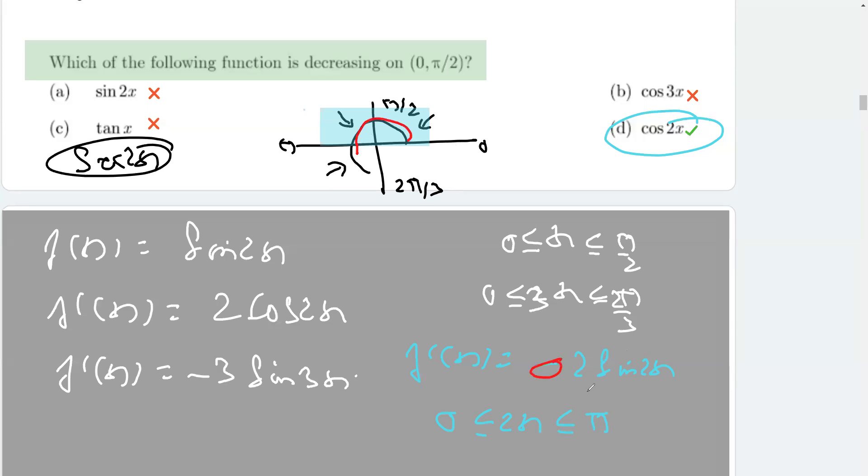But as you can see, there is a minus sign over here. So, the function will be, this will be negative. So, f dash x will be less than 0 in this case. So, this will be a decreasing function throughout 0 to π by 2 or x belonging to 0 to π by 2.